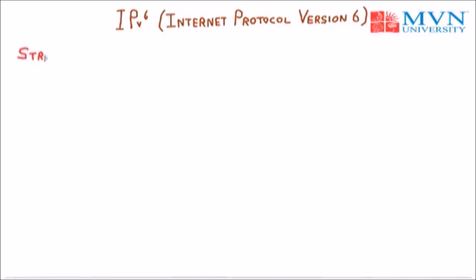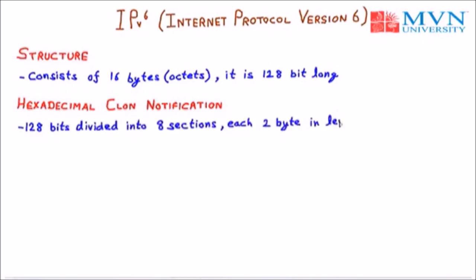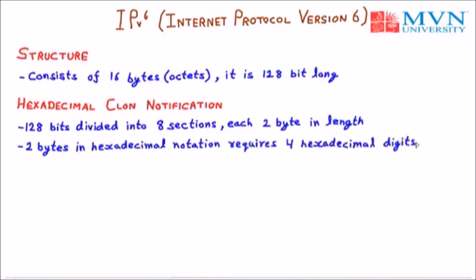First of all, we will discuss the structure of IPv6. The structure of IPv6 consists of 16 bytes or octets and is 128 bits long. Now, how to represent IPv6? We have a hexadecimal colon notation to represent IPv6. The IPv6 address is of 128 bits and is divided into 8 sections, each of 2 bytes in length. For 2 bytes in hexadecimal notation, we require 4 hexadecimal digits. So the IPv6 address consists of 32 hexadecimal digits, with every group having 4 digits, separated by a colon.